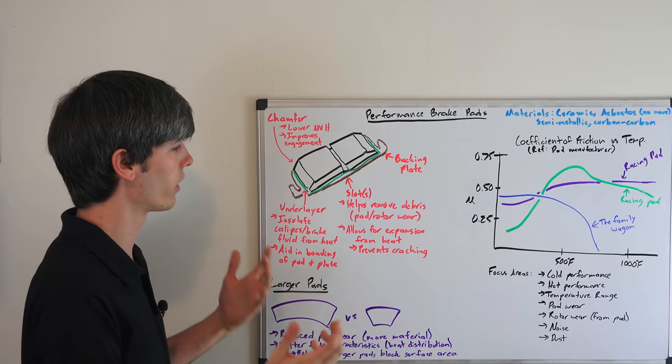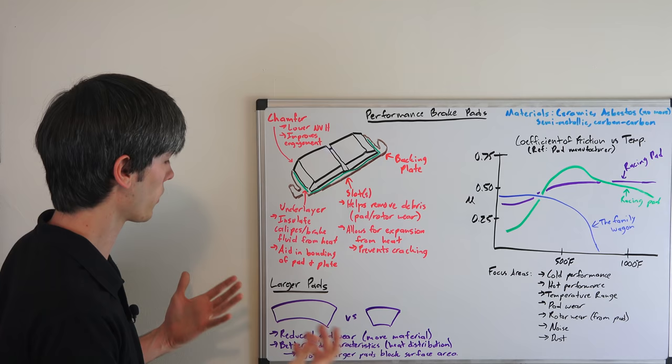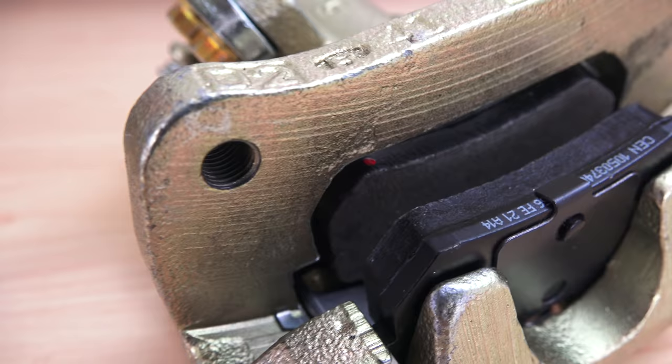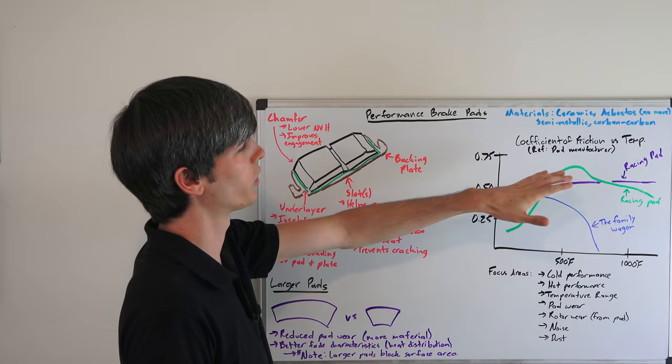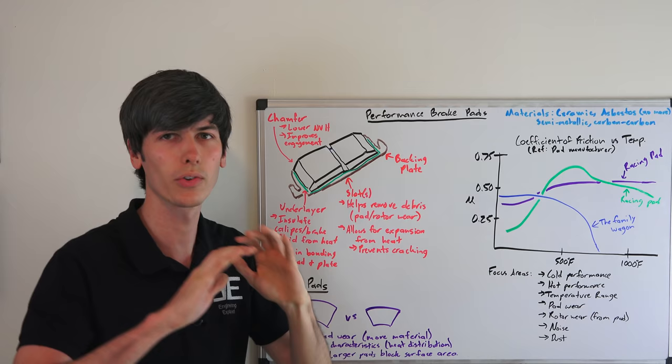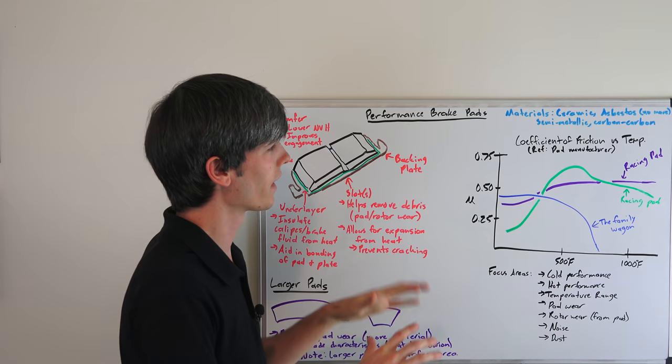So there's all kinds of materials out there that are going to be used in brake pads. I just listed a few: ceramic, asbestos which are no longer really used, semi-metallic, carbon carbon, some other examples. There's all kinds of materials out there. That's not really that important for the consumer to know necessarily about the material. What's more important is this graph right here, which is the coefficient of friction versus the temperature of the pad.